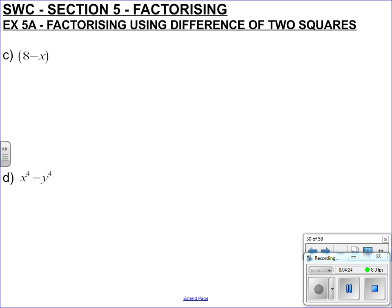8 minus x, so this links with what we were talking about before. There's a minus in here, so in theory this can be split into a difference of two squares. You've got 8, so we need the square root of 8 in both brackets in order to, when they times each other, for them to produce 8. So you could write square root of 8 in here and square root of 8 in here. And x, you've got square root of x, square root of x.